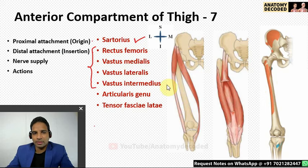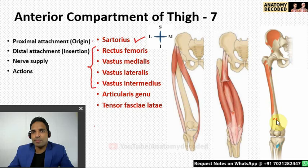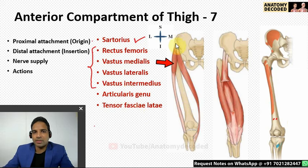Articularis genu is a small slip of muscle attached to the lower one-fourth of the anterior surface of the femur. Its distal attachment goes up to the suprapatellar bursa — it pulls and keeps the suprapatellar bursa intact. Its nerve supply is again by the femoral nerve.